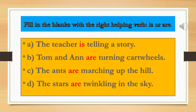On page number 59, some pictures are given where you have to fill in blanks with 'is' or 'are'. The answers: 'The teacher is telling a story' — because 'teacher' is singular, we use 'is.' 'Tom and N are turning wheels' — Tom and N are two people, so they are plural, and we use 'are.' 'The ants are marching up the hill' — 'ants' is plural, so we use 'are.' 'The stars are twinkling in the sky' — 'stars' is plural, so we use 'are.'